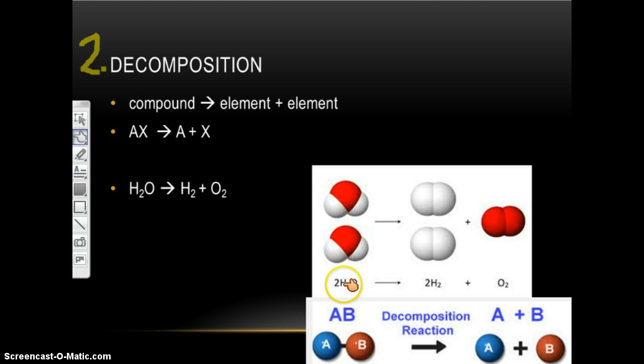And in this case, you can see there's two H2Os, and it breaks down into a total of two H2s and one O2. And we're going to talk more about these big numbers in the next lesson. But the big idea, one compound doesn't matter how many, makes an element plus an element doesn't matter how many. And then of course the bubble format, AB is a compound yields A plus B.